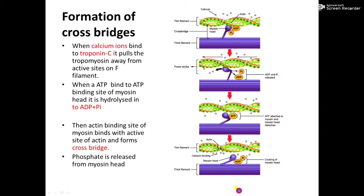ATP binds to the ATP binding site and is hydrolyzed into ADP and inorganic phosphate in the presence of ATPase enzyme. Energy is liberated during this hydrolysis. This energy is useful for the binding of the myosin head to the active sites on the actin filament, forming the cross bridge. The actin binding site on the myosin attaches to the active site of the actin filament and forms the cross bridge.